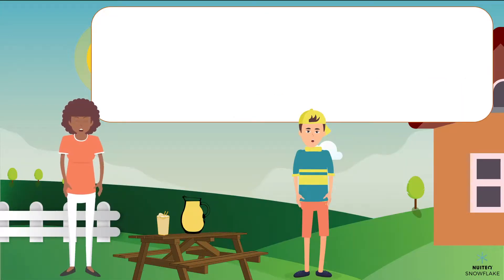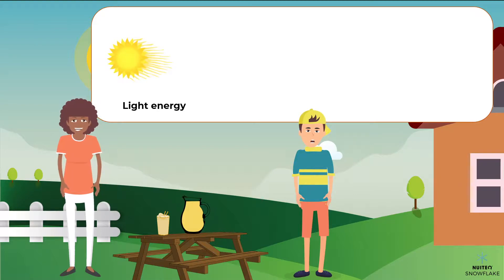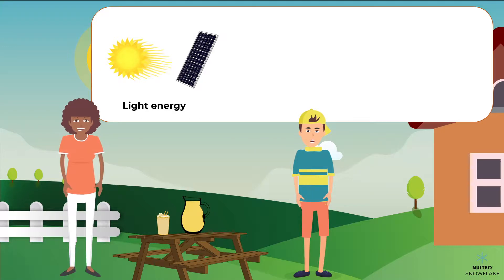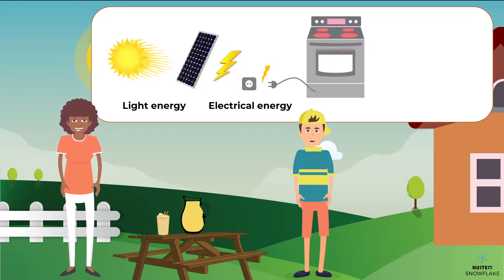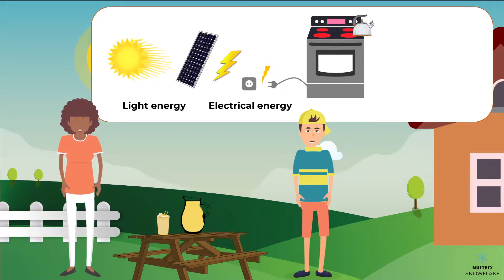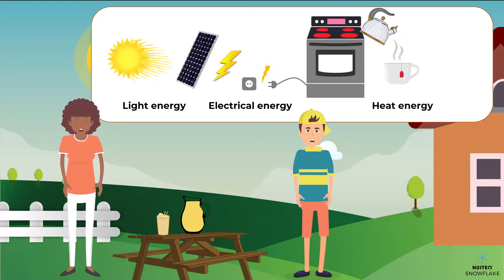Okay, so let me see if I understand. First, the sun produces light energy. The light energy gets turned into electrical energy in the solar panels. This electrical energy gets sent to our homes. When we turn the stove on, this electrical energy gets converted into heat energy. The heat energy makes the water in the kettle boil. And then we can make our tea, which is very hot, and can warm us up on a cold day.